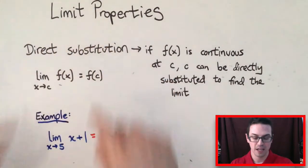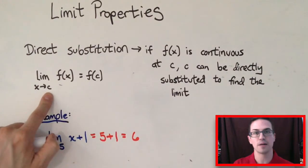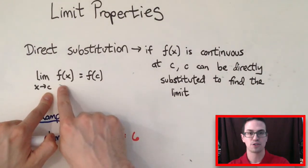And again, this is through the limit property of direct substitution. So that's basically how direct substitution works. All you have to do is worry about if this C value right here is continuous at this function right here.